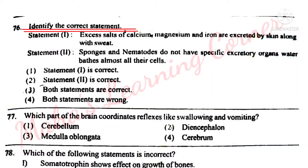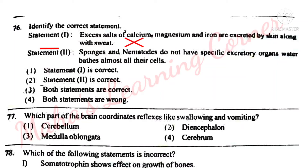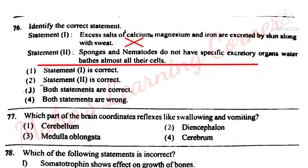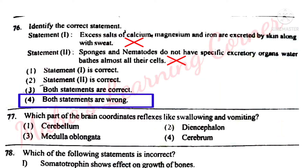Identify the correct statement. Statement 1: Excess salts of calcium, magnesium, and iron are excreted by skin along with sweat – this is wrong. They are actually secreted by epithelial cells of the colon (large intestine). Statement 2: Sponges and nematodes do not have specific excretory organs, as water bathes almost all their cells – this is also wrong. So the correct answer is Option 4: both statements are wrong.